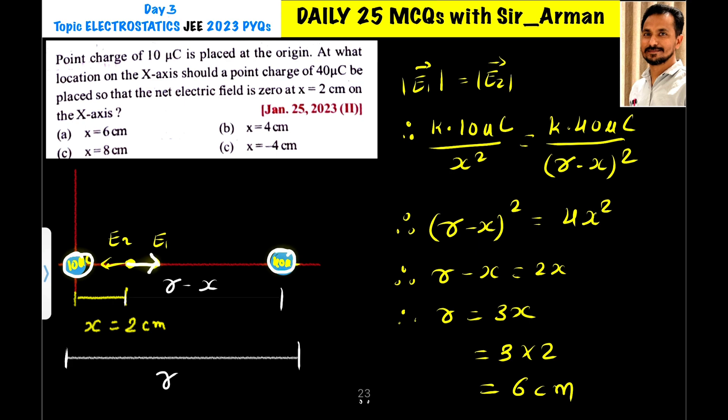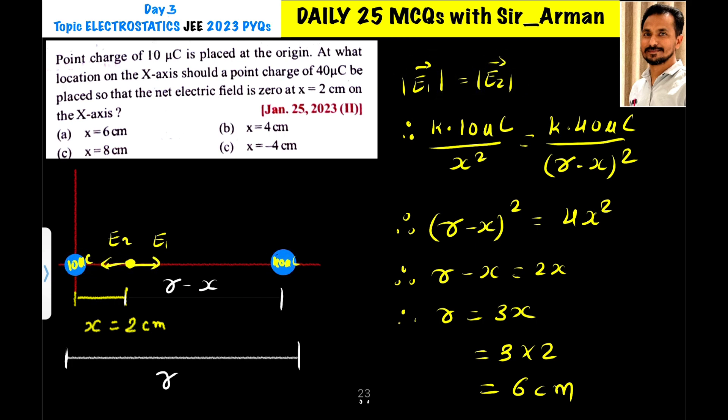The 10 microcoulomb charge will create an electric field pointing to the right at that point. The 40 microcoulomb charge, which is also positive, will create a field pointing to the left. The net electric field is zero only when the magnitude of E1 equals E2.